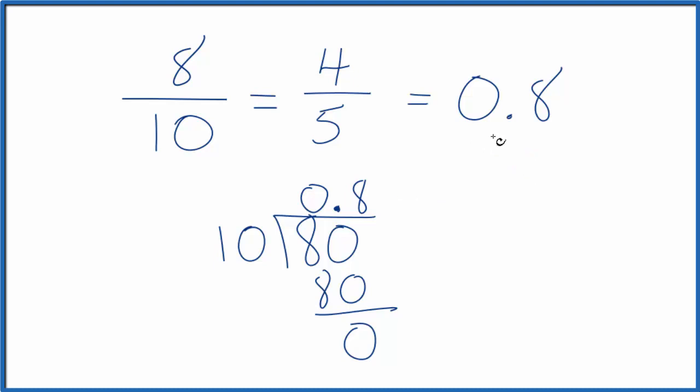If we wanted to check our work, we could take 0.8 here and multiply it by 5, the denominator, and that would give us 4, the numerator. Same thing with 8 tenths. If we multiplied 0.8 times 10, we would get 8.